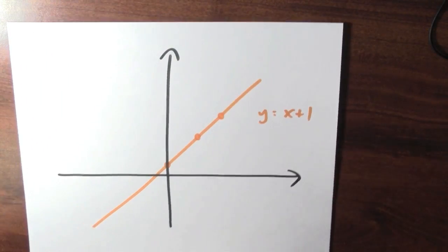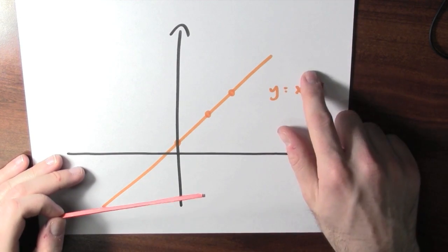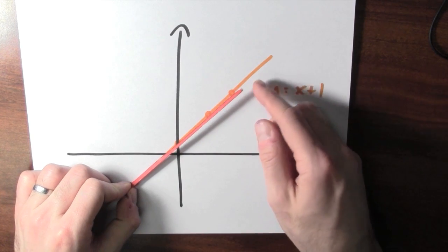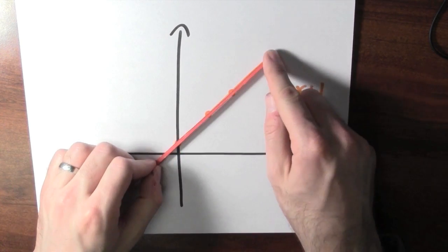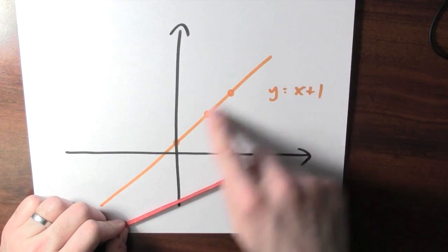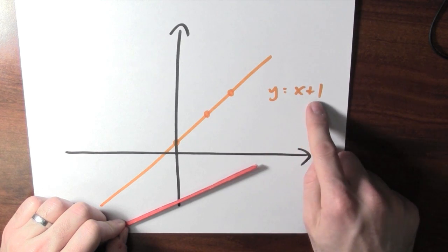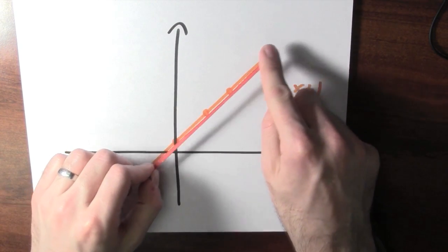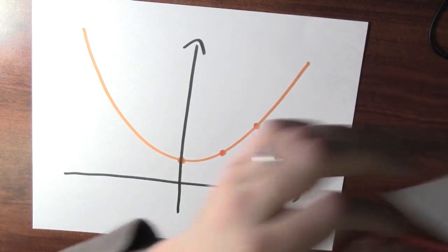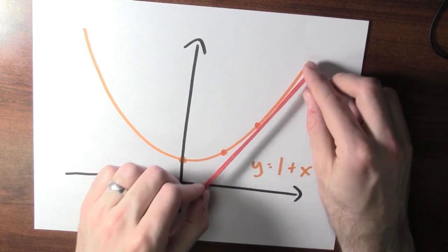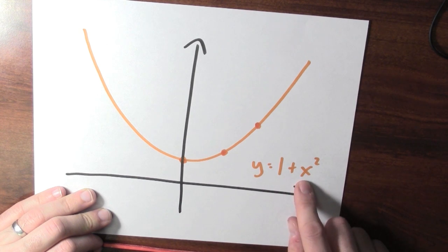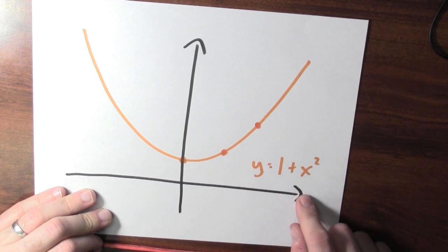Contrast that with a perfectly straight line. Here I've drawn three points on this line. The tangent line to this line is just the line itself, so the slope of this tangent line isn't changing at all. And the second derivative of this function, y = x + 1, really is 0 — the function's derivative isn't changing at all. Here in this example, the function's derivative really is changing. And I can see that if I take the second derivative: if I differentiate y = 1 + x², I get 2x, and if I differentiate that again, I just get 2, which isn't 0.